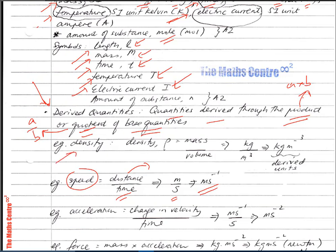Density is another derived quantity. The symbol for density is rho (ρ), defined as mass over volume. Mass is in kilograms; volume is length × breadth × height, giving meter × meter × meter = meter cubed. So the units for density are kilograms per meter cubed — these are derived units.